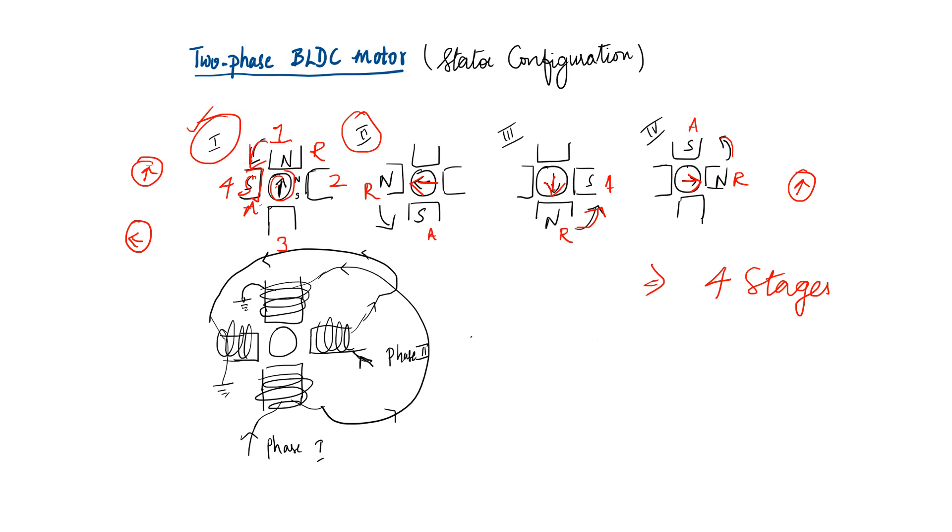So two phase - the phase one current is passing through this stator number three and going to stator number one where it is grounded. It can be otherwise also. It can go through stator number one and then go through stator number three. It can be any way but I have taken this way.